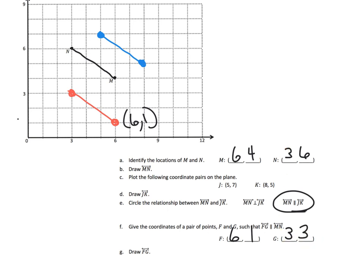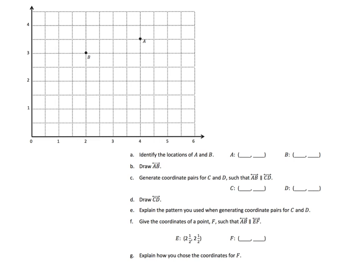This next problem is more of the same, but now we may have fractions involved. We'll record the locations: point A is at (4, 3.5) and point B is located at (2, 3). If you need to pause the video to understand how I got those, go ahead. We're supposed to draw the line connecting A and B — that's about as straight as I can get without a physical straight edge — and then generate coordinate pairs for C and D such that the new line is parallel to line AB.